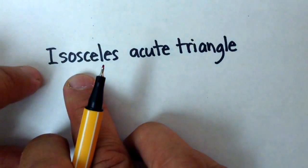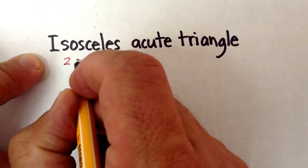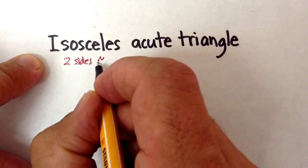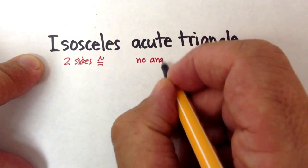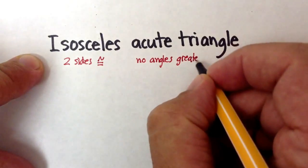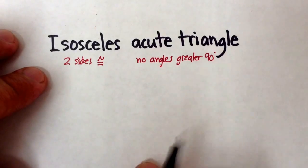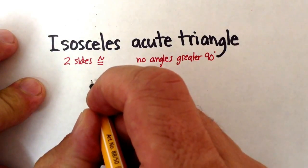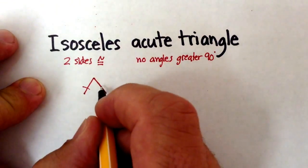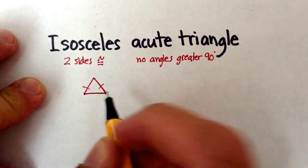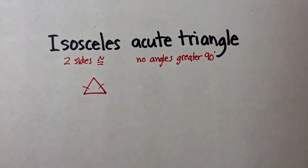Now let's try another one. Let's try an isosceles acute triangle. So again, isosceles means that two sides are congruent, but acute means that there are no angles greater than 90 degrees. Or the way that we said it before is that all the angles have to be less than 90. So let's try to do one of these. Let's draw two sides that are equal. We'll call this one equal to that one, and then let's just go across. And then each of those angles is less than 90 degrees.